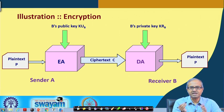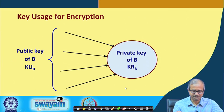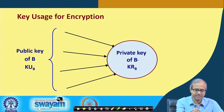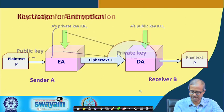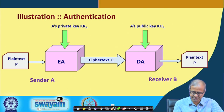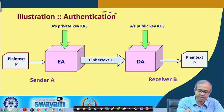Just by slightly changing the configuration and the order of these operations, we can also allow some kind of authentication process to take place using the same kind of process. The public key is known to everybody, private key is only available with B. So many parties can send the message, but only B can decode it. Now let us talk about another application of public key cryptography, namely authentication.